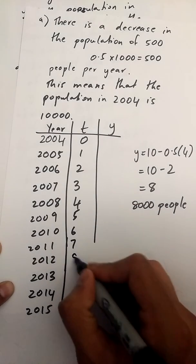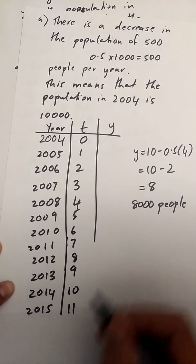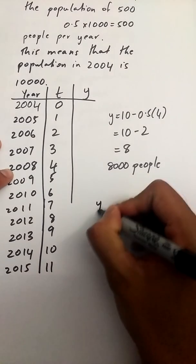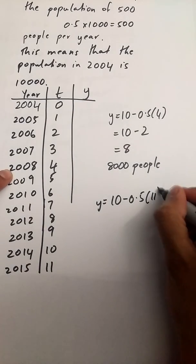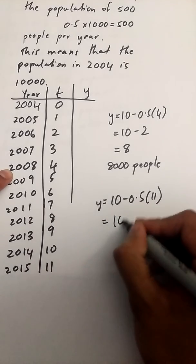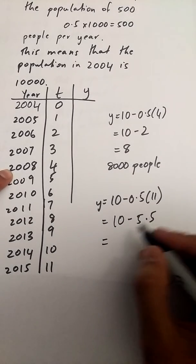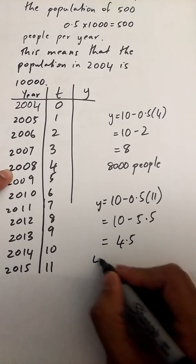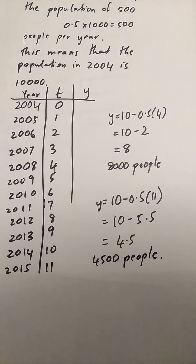So I'm going to continue my t, 5, 6, 7, 8, 9, 10, 11. So my t is 11 for this example. And I'm going to sub that into my equation y equals 10 minus 0.5 times 11, which equals 10 minus 5.5, which is 4.5, so basically 4,500 people three years after the final year.